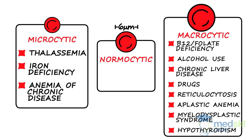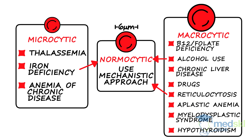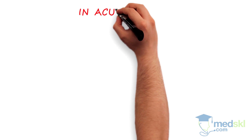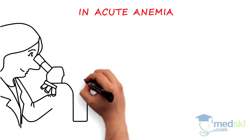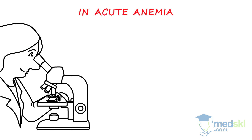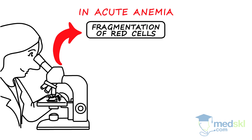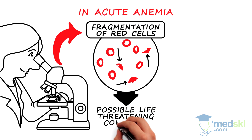Normocytic anemia may involve a combination of factors and is best evaluated using a mechanistic approach. In cases of acute anemia, the blood smear must be reviewed to assess for fragmentation of red cells, which may indicate a life-threatening condition,